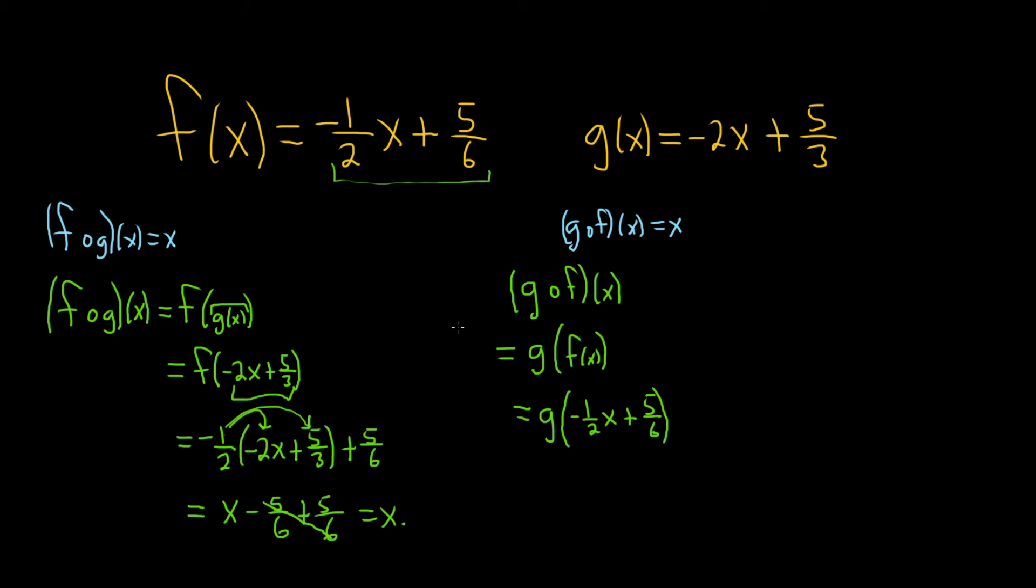All right, so now we have to look at g. So g is negative 2x plus 5 thirds. So we have to take this x and replace it with our new x, which is this thing here. So this will be equal to negative 2 times, parentheses, negative 1 half x plus 5 over 6, and then we still have the plus 5 thirds. So it's negative 2 blah plus 5 thirds.